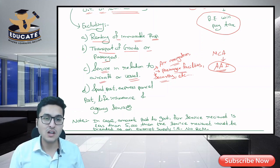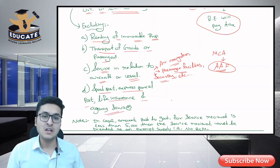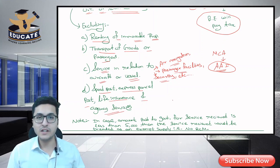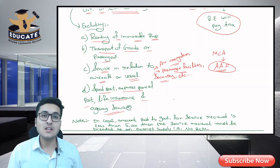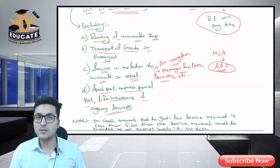Fourth excluded service: speed post, express parcel post, life insurance, and agency services. If Central Government, State Government, Union Territory, or Local Authority provides these services to a business entity, reverse charge mechanism does not apply.